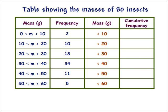Now we complete the cumulative frequency column. The values that we're going to fill in are the numbers of insects that have masses, as indicated in the mass column that we just completed, in orange. 2 insects weigh less than 10 grams, so we write 2. 12 insects weigh less than 20 grams, so we write 12. These insects are the 2 that weigh between 0 and 10, as well as the 10 that weigh between 10 and 20.